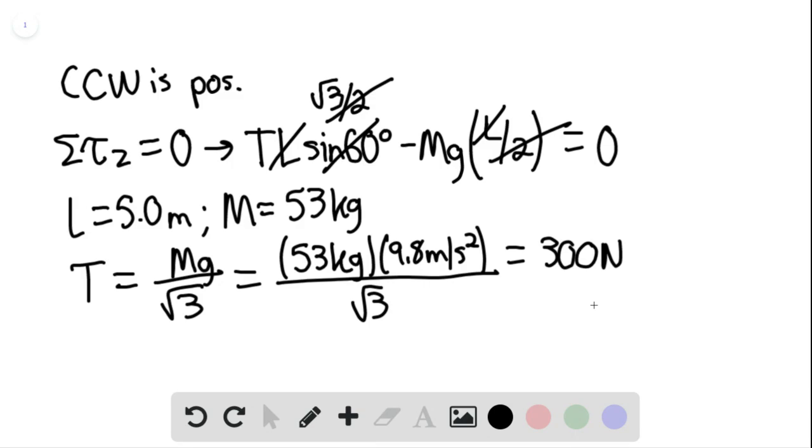We can then apply the sum of forces in the x and y directions. The sum of forces in the x direction would equal zero, therefore the force of the pivot in the x direction would equal negative T cosine of theta, equaling negative 150 newtons, where theta is 60 degrees.